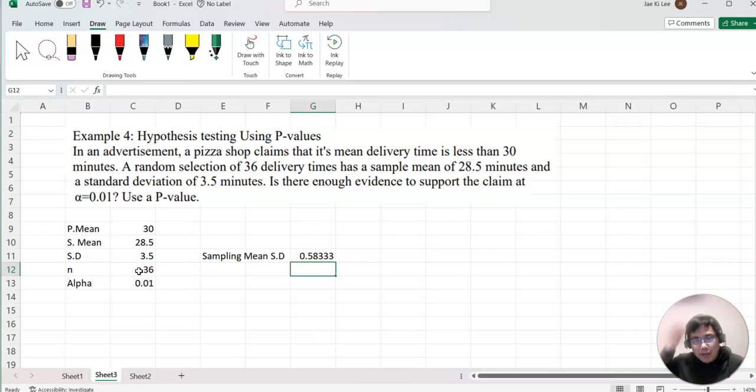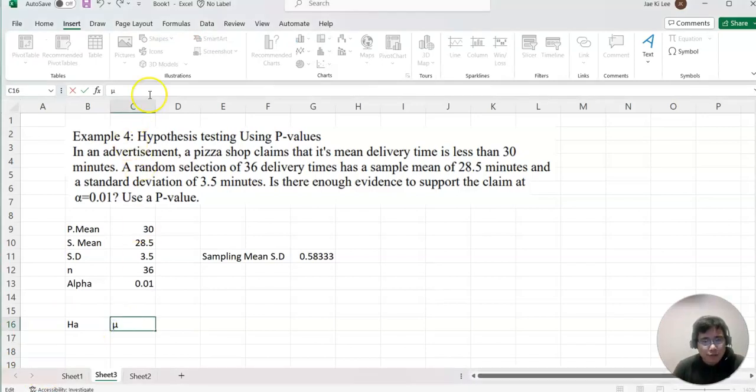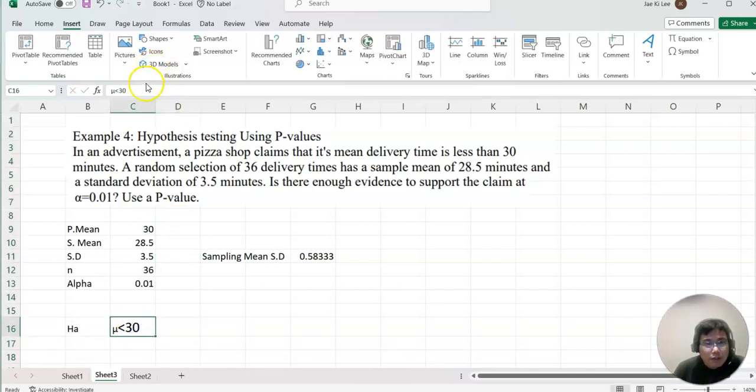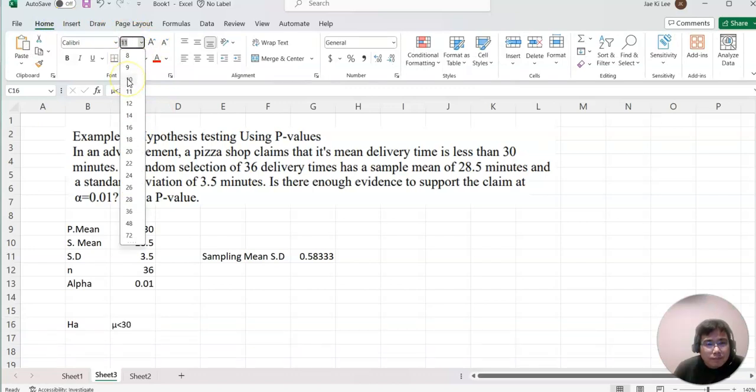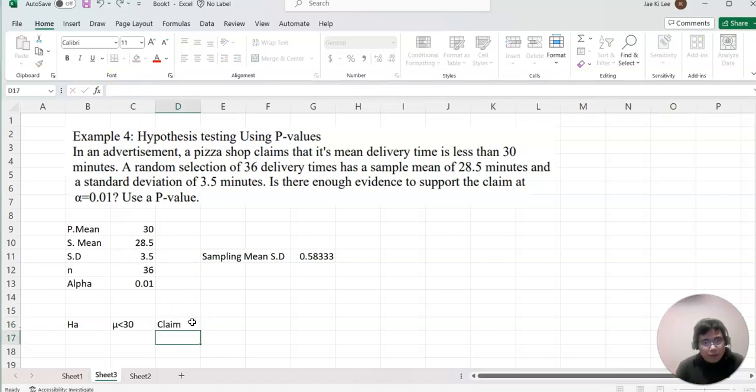Now let's set up the hypothesis test. It shows that less than 30 minutes, so it becomes H-a. Mu is less than 30 minutes. That's our claim.